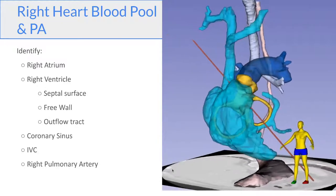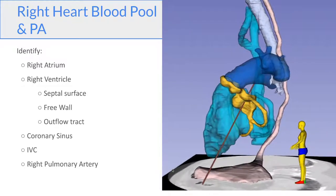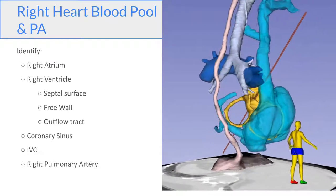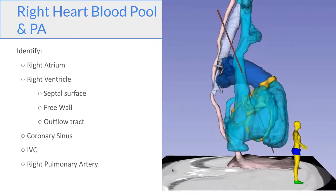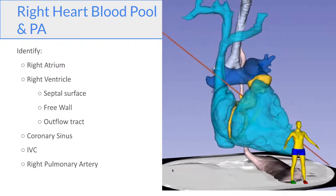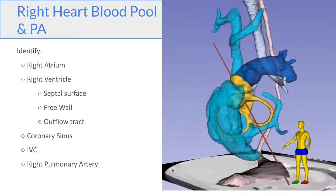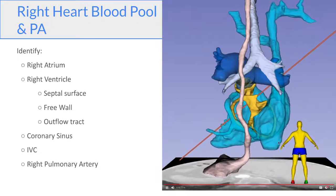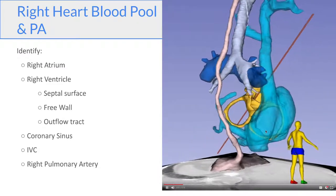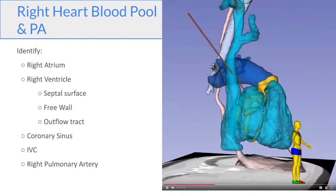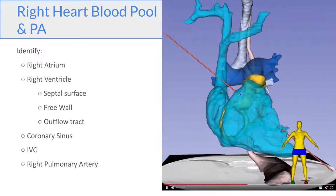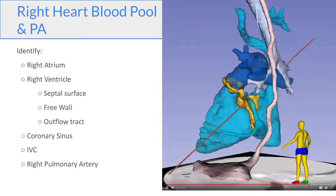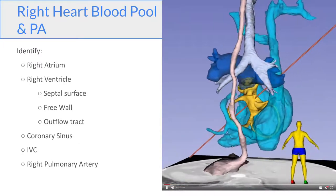So next we're looking at the right heart blood pool now. So you can see the right ventricle going from the tricuspid valve to the pulmonary valve as triangular shape. You can see the coronary sinus wrapping around the mitral valve annulus. And you can see a little bit of the IVC and the SVC coming to the right atrium, the right atrial appendage, and the triangular shape of the RV, the RV outflow tract, and the main PA, the left PA, and the right PA passing behind the SVC.